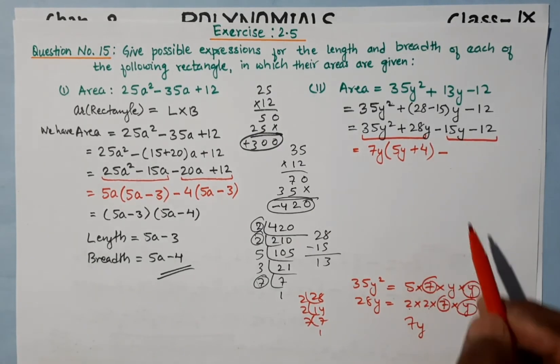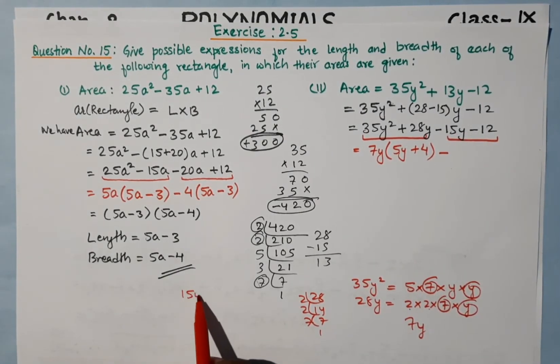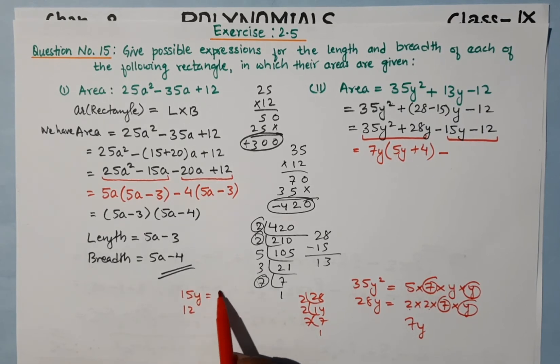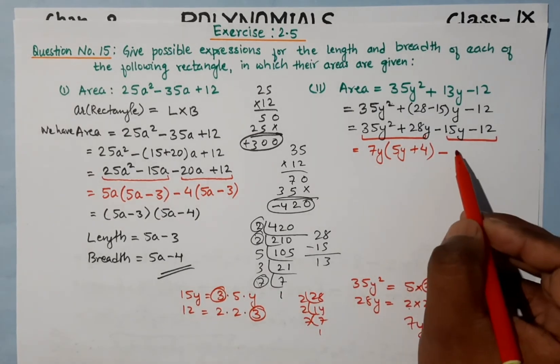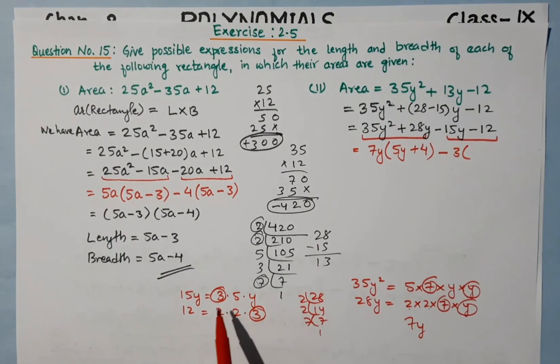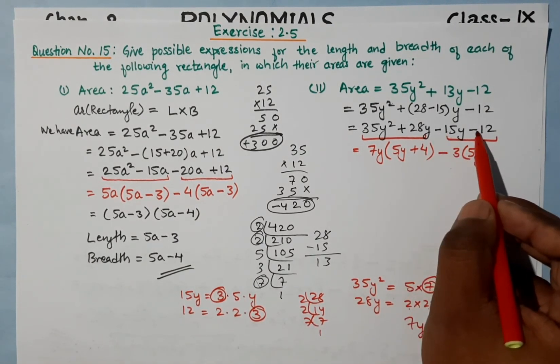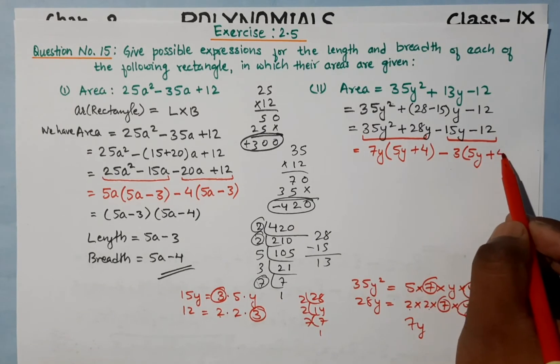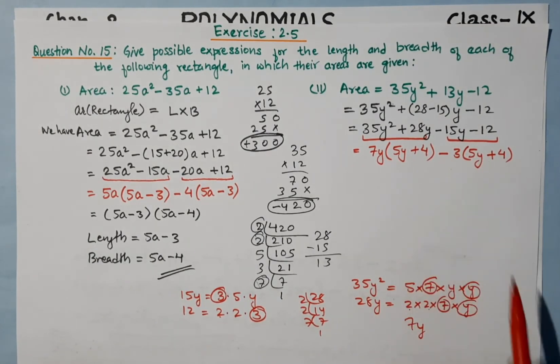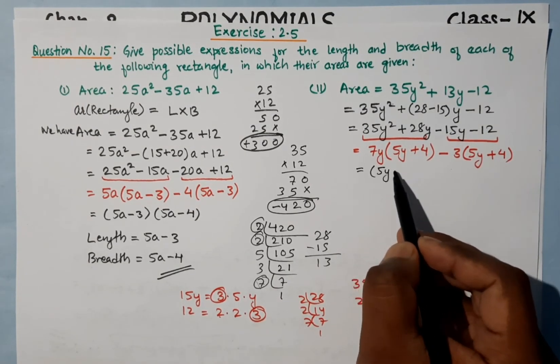From -15y and 12, 15y is 3 into 5 into y, and 12 is 2 into 2 into 3. The common factor is 3, giving us -3(5y - 4). When minus into minus becomes plus, we get -3(5y + 4). Wait, it should be 5y plus 4.